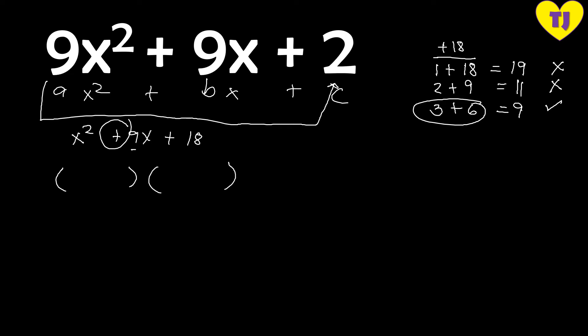Now we write the factors in parentheses: (x plus 3)(x plus 6), taking the square root of x squared to get x. But these are not the final factors yet — we slid off a 9 earlier, so we need to put it back by dividing each number in the factors by 9.